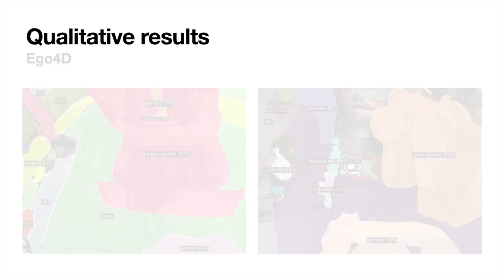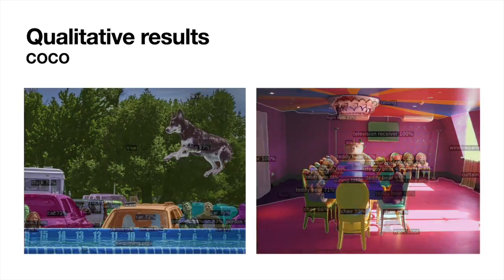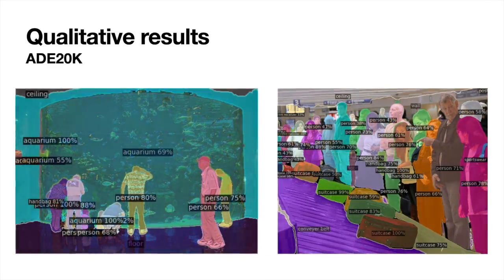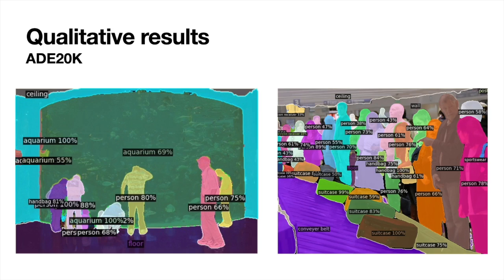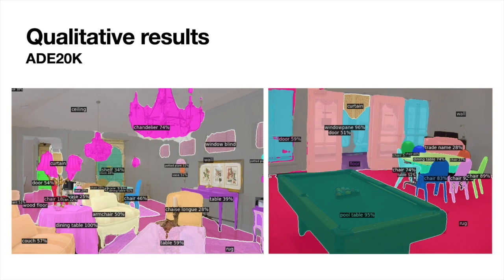Here is the visualization on the COCO and ADE20K datasets. Conveyor Belt, Aquarium, Chandelier, and Pool Table are all novel categories recognized correctly by Odyssey.